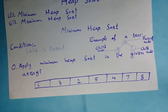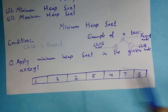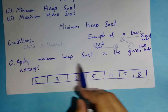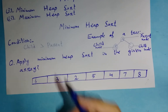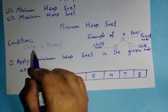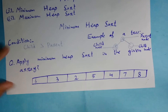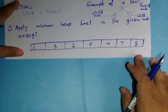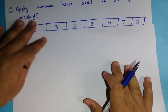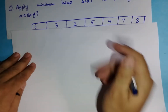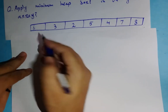Here I've written down the question: apply minimum heap sort in the given array. I've taken this array as an example and now I'm going to apply minimum heap sort in it. I have to take care of one condition: the value of the child node should be greater than the value of the parent node. The first value from the array is 6, so I make the node of 6.